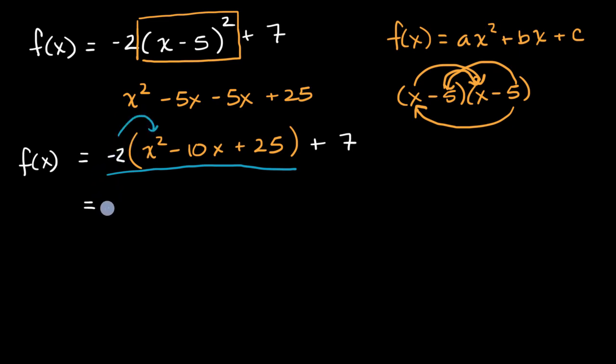So negative two times x squared. We have to be very careful here. Make sure we get our signs right. It is negative two x squared. Negative two times negative 10x. Negative times a negative is a positive. Positive 20x. And then negative two times positive 25 is negative 50, or we're going to subtract 50 there.